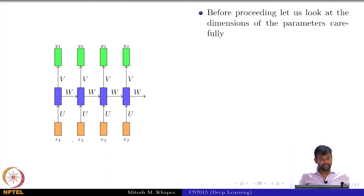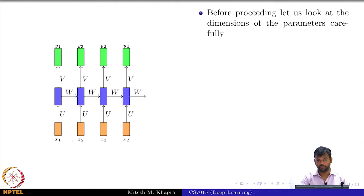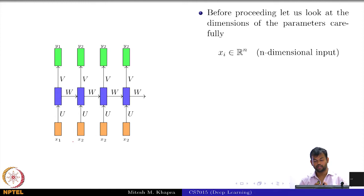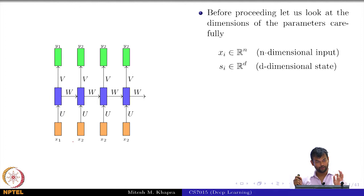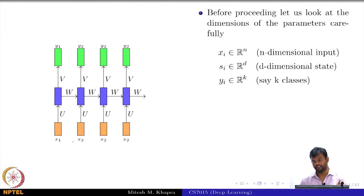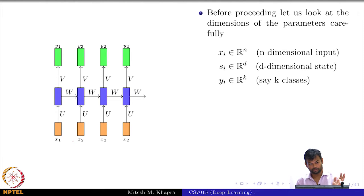Before we proceed, let us look at the dimensions of the parameters. X_i belongs to R^n, S_i belongs to R^d — that means S_i is a d-dimensional vector — and y_i belongs to R^k, which has k classes.